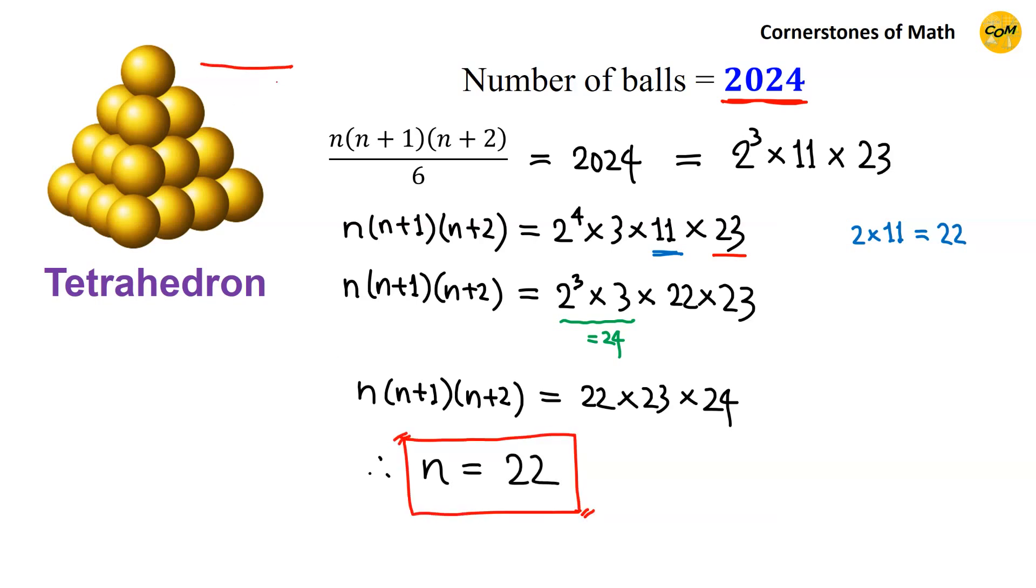Therefore, if you construct a tetrahedron with 22 layers, then the total number of balls in the tetrahedron is 2024.